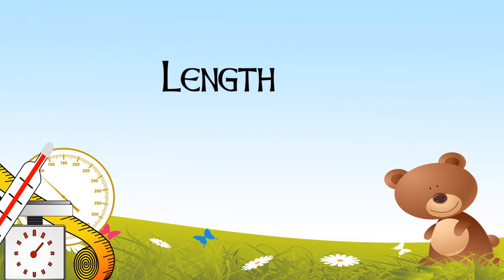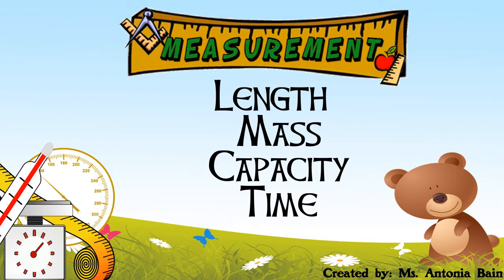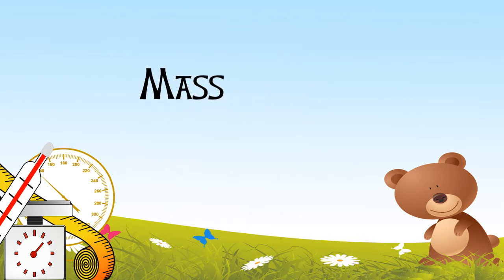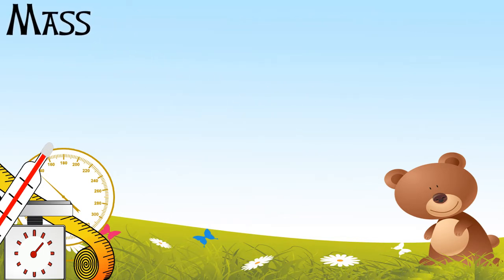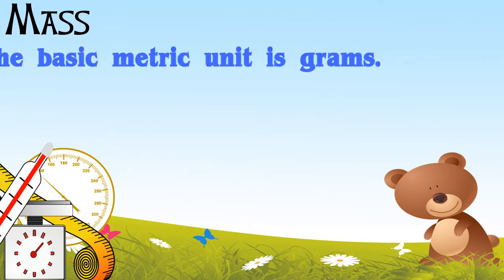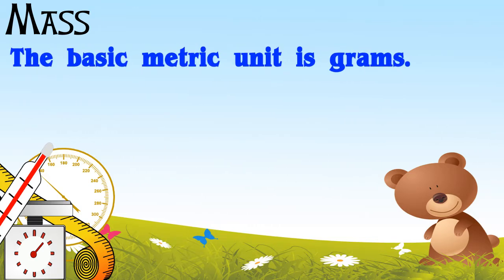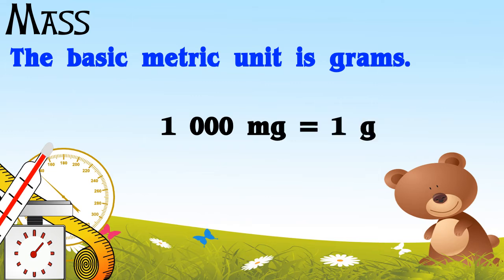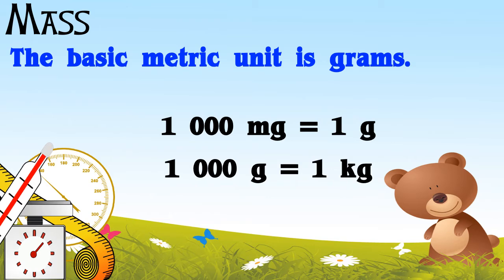Let's look now at the metric unit for mass. The basic metric unit for mass is grams. There are 1,000 milligrams in 1 gram and 1,000 grams in 1 kilogram.